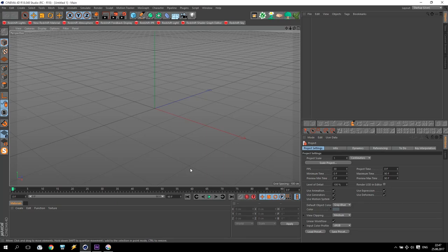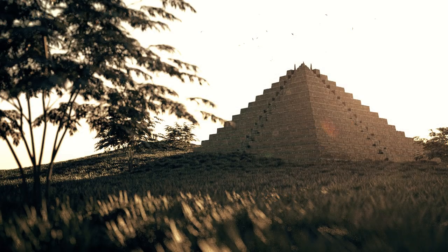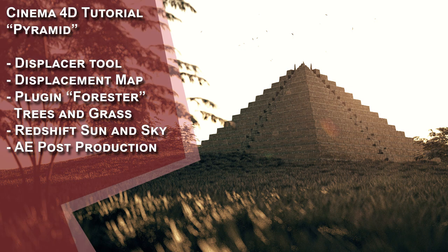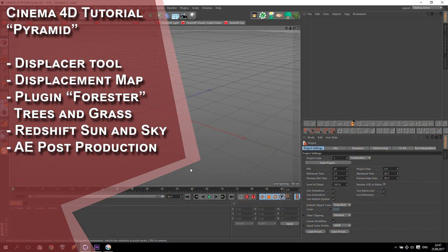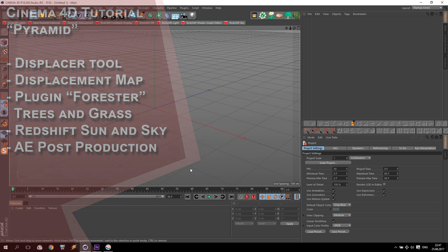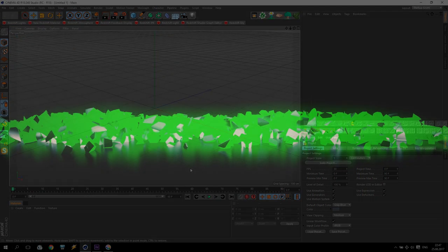Hi my friends and welcome to my new tutorial. I am SV and today we will do this composition. I will show you how to use displacer tools and how to create a displacement map. Additionally I will show you a very interesting plugin for Cinema 4D called Forester. Together with this plugin we create some trees and grass. I will also show you how to create a Redshift Sun and Redshift Sky, and finally we will do some small post-production in Adobe After Effects. Let's start.